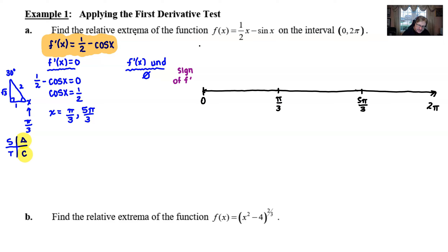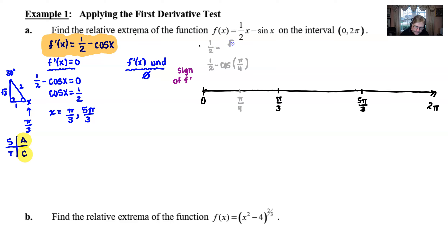First, I'll select a test value between 0 and π/3. There aren't many cooperative values, but π/4 or π/6 would work. Let's try π/4: we compute ½ - cos(π/4) = ½ - √2/2. Since √2 is about 1.4, the half minus √2/2 is a negative value. That means the behavior of F is decreasing on this first interval.